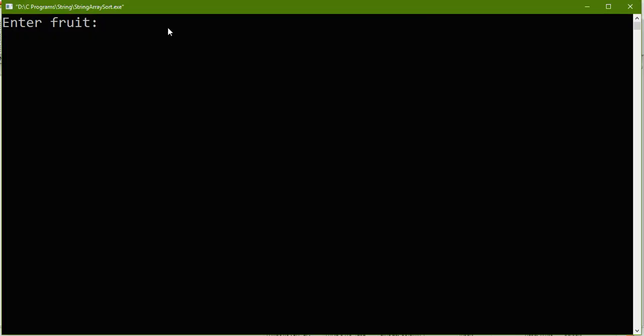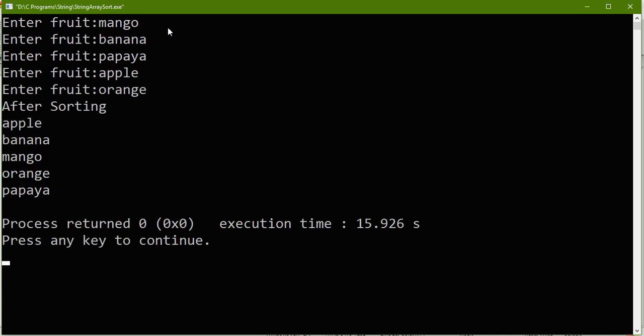So let us execute it. Again I'm going to enter the same data that we took for example: mango, banana, papaya, apple, and orange. These are my five fruits, and let us observe the difference.